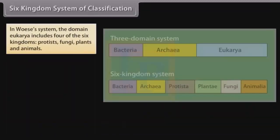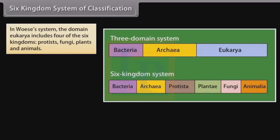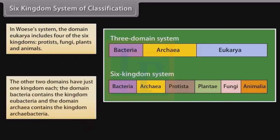In Woese's system, the domain Eukarya includes four of the six kingdoms: Protists, Fungi, Plants, and Animals. The other two domains have just one kingdom each. The domain Bacteria contains the kingdom Eubacteria, and the domain Archaea contains the kingdom Archaebacteria.